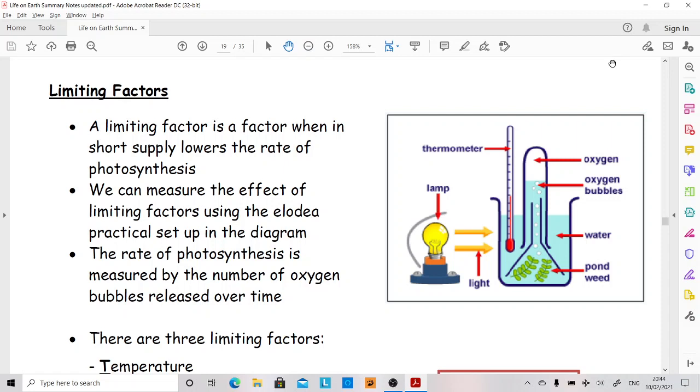When we look at photosynthesis, there are certain things that if we do not have enough of them, we cannot get our photosynthesis to happen any faster, even if we were able to adjust other factors.